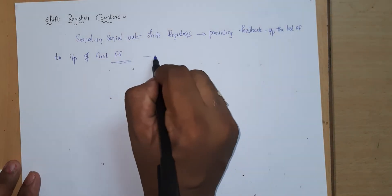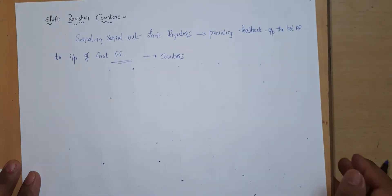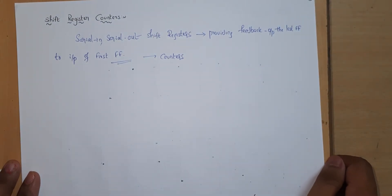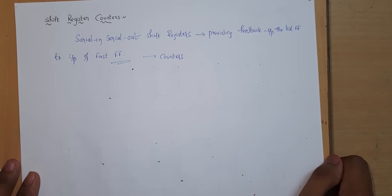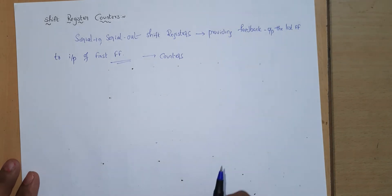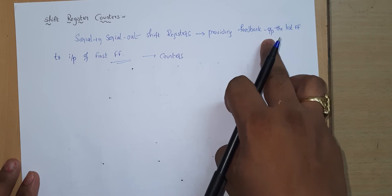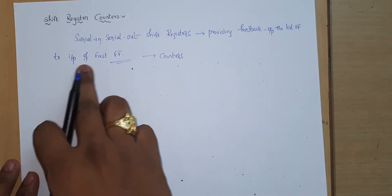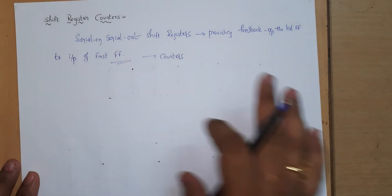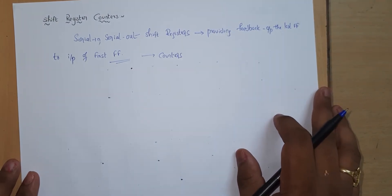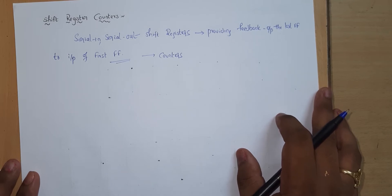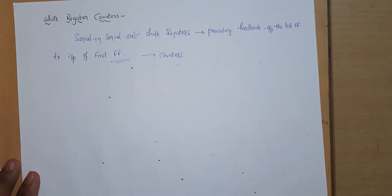These devices are called counters because they exhibit a specified sequence of states. So the definition of shift register counters is: they are obtained from serial-in serial-out shift registers by providing feedback — that is, the output of the last flip-flop is connected to the input of the first flip-flop — and they exhibit a specified sequence of states.